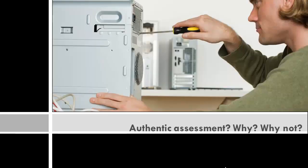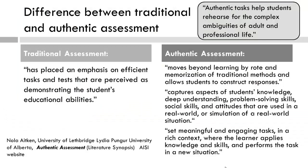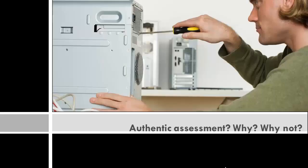Let's look at this assessment example. On first glance, it may appear to be an example of authentic assessment. Let's recap what Aitken and Pungar found in their synopsis of the literature — pause and review. Before we can determine whether this is authentic assessment, we need more information. What if the instructor is standing behind the student and telling him exactly what pieces of the computer to disassemble? Would it be an authentic assessment?